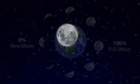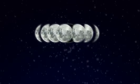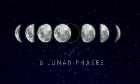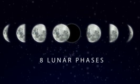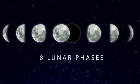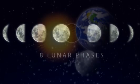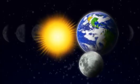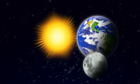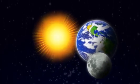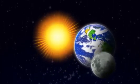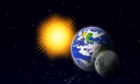The appearance of the Moon is categorised into eight phases called lunar phases. These phases are determined by the relative positions of the Moon, the Earth and the Sun.